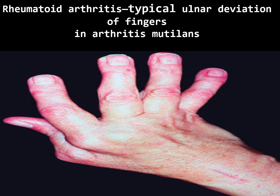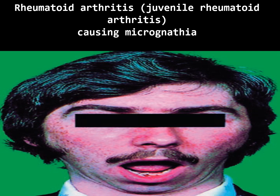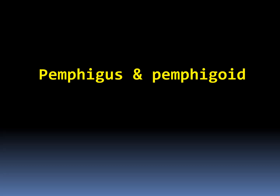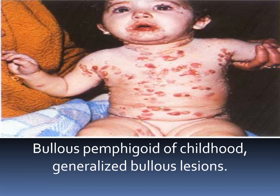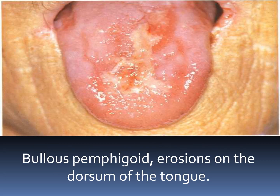Rheumatoid arthritis: typical ulnar deviation of fingers in arthritis mutilans. Juvenile rheumatoid arthritis causing micrognathia. Pemphigus and pemphigoid: paraneoplastic pemphigus showing persistent erosions of the lower lip, severe conjunctivitis, and edema of the eyelid. Bullous pemphigoid of childhood with generalized bullous lesions.